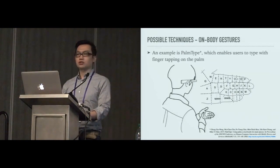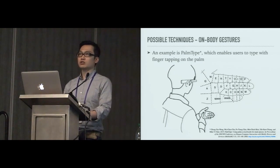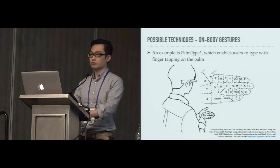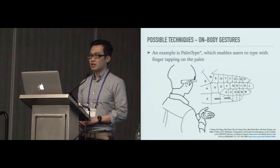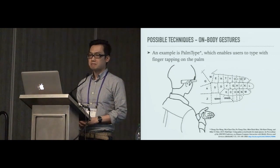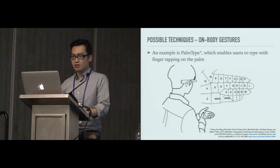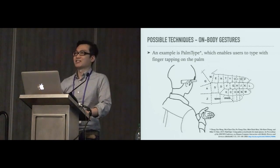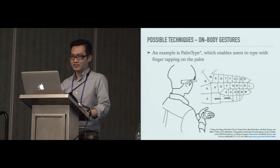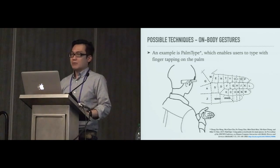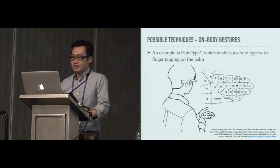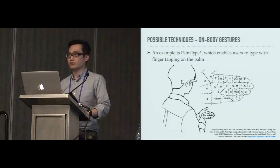Another type is on-body gestures. On-body gestures requires users to perform in physical contact with part of the body. Touching on the body can be of less concern, since we usually do that unconsciously. However, the interaction might be limited to touch events, and in this case, requires both hands.